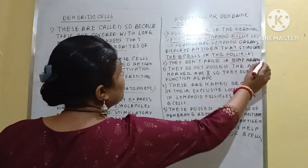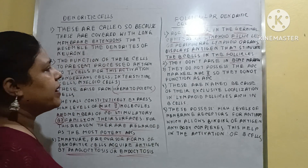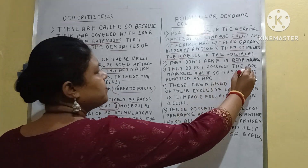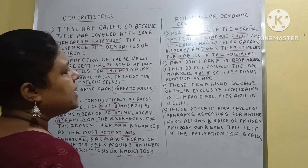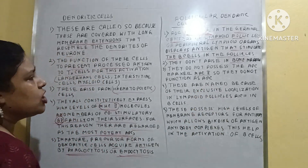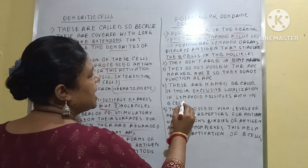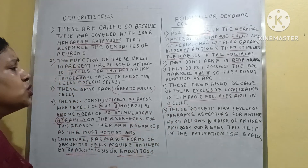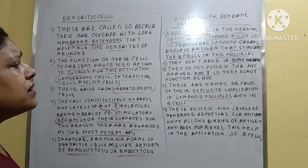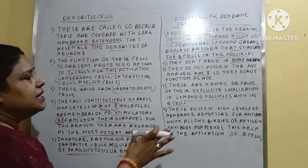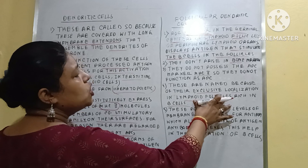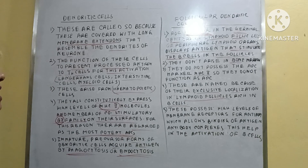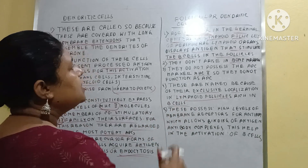Follicular dendritic cells do not arise from the bone marrow. They do not possess MHC 2 complex. These are named so because of their exclusive localization in the lymphoid follicles that are rich in B cells — they remain in the lymphoid follicles which are rich in B cells, and that is why these are called follicular dendritic cells.